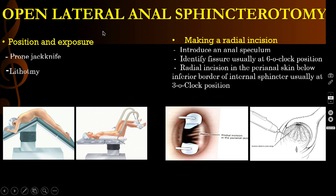Coming to the open lateral internal sphincterotomy: this sphincterotomy can be done either by open method or closed method. First, let me explain the open method. The position of the patient is prone jackknife position or lithotomy position. Then you have to expose the area, introduce an anal speculum inside — this is a bi-valved speculum or a single speculum, either of these you can use. Then you can identify the fissure, which is usually at the 6 o'clock position.